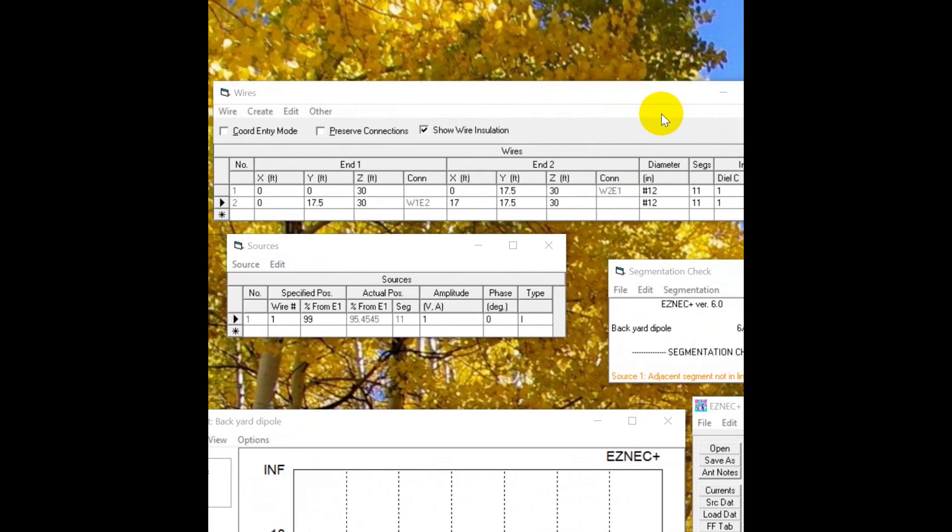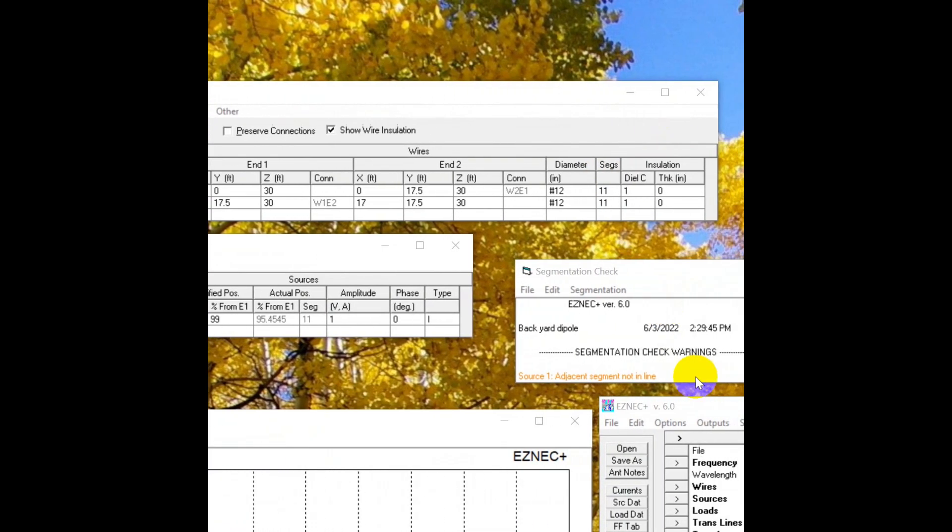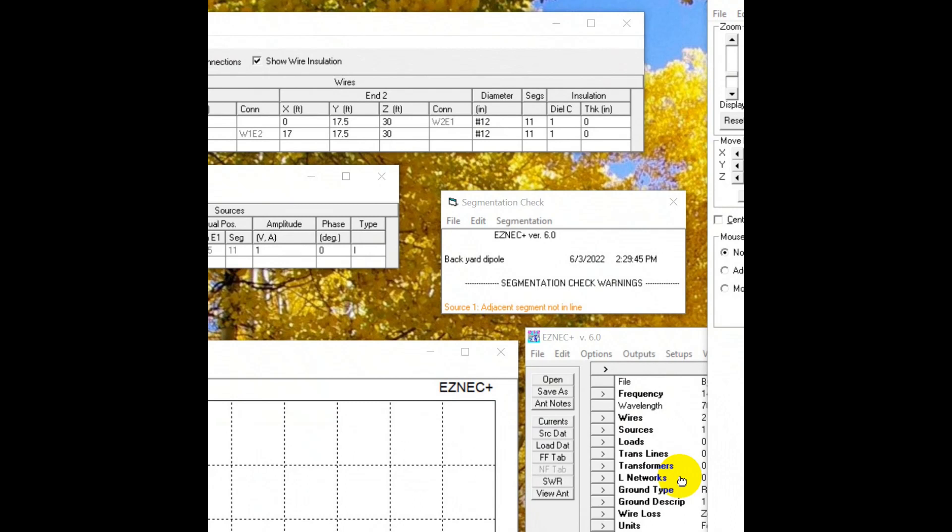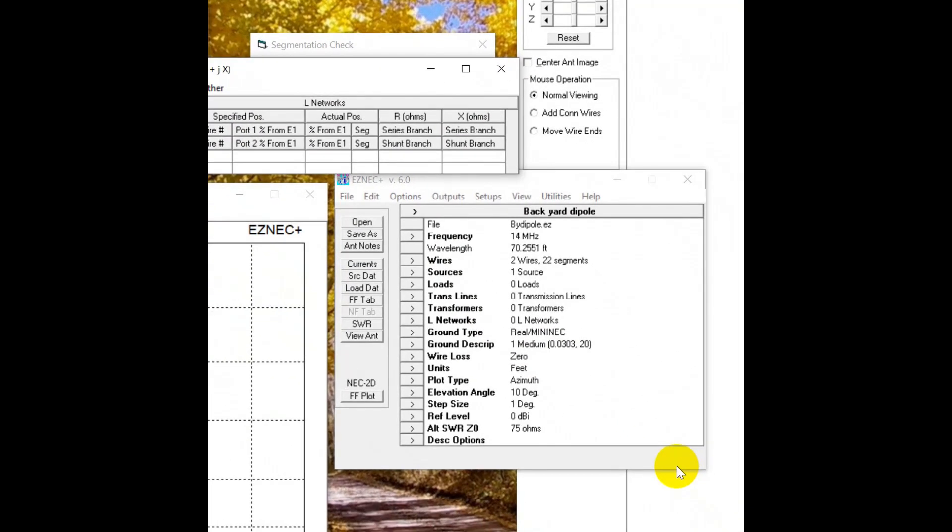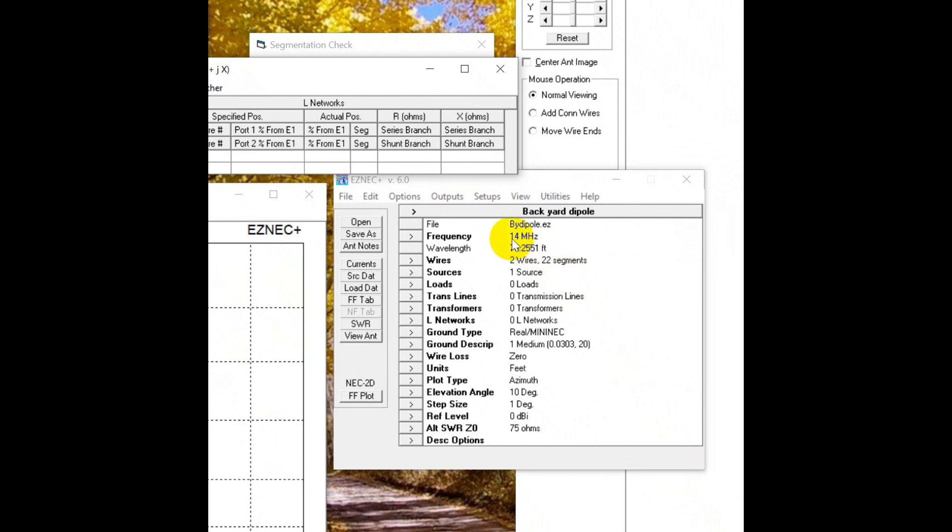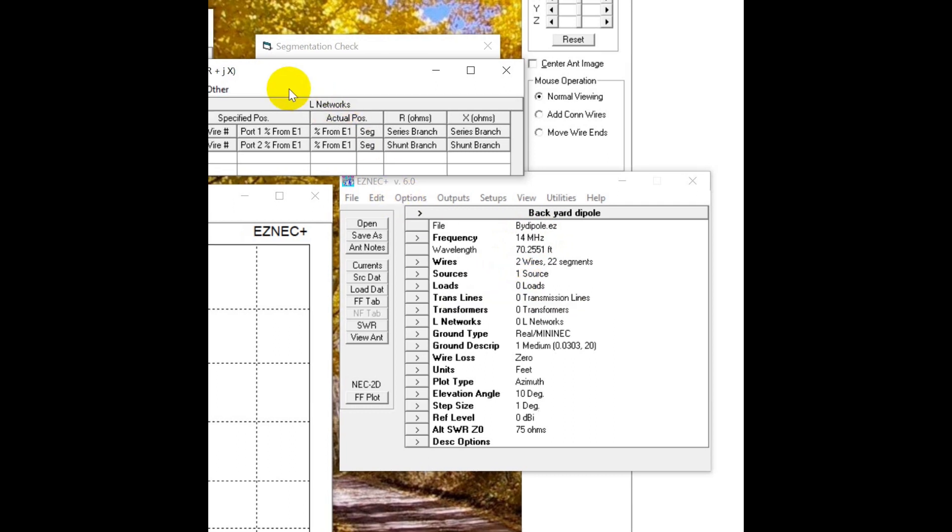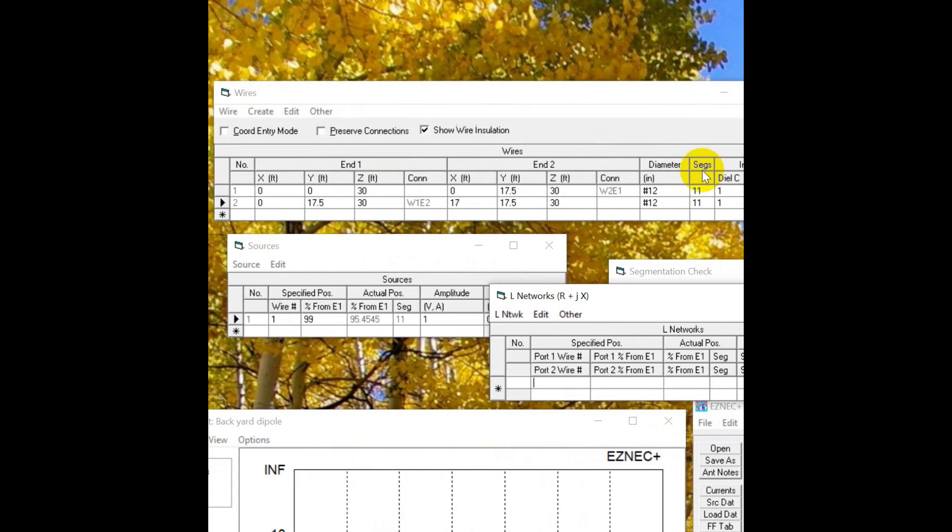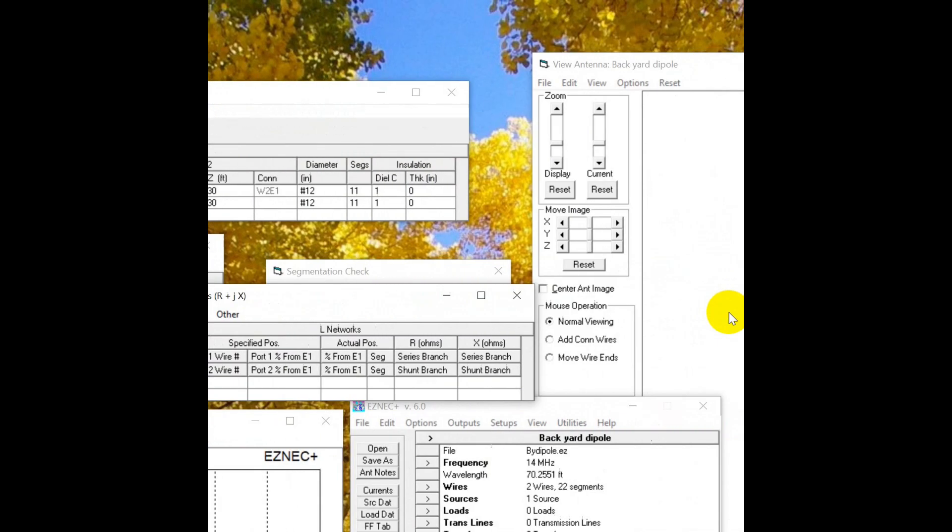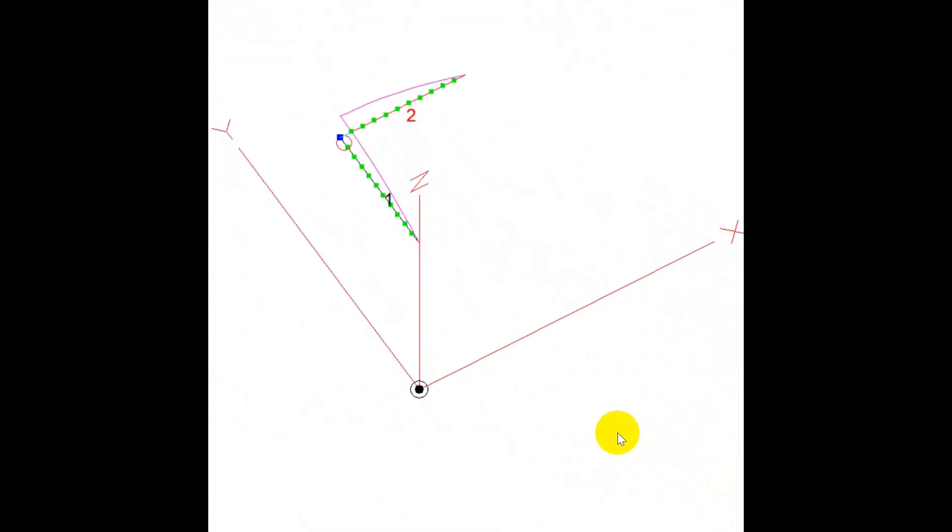This is the input here for the Easy NEC Plus version 6. And it shows a simple backyard dipole that they have. It's one of the files that comes with it. It's for 20 meters. And what I have done is gone in with the wires and taken the one wire and moved it 90 degrees. So this is what it looks like right here.